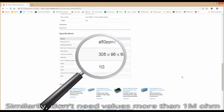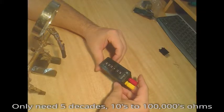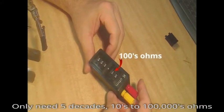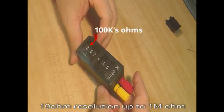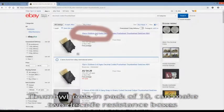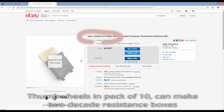Similarly, I don't need values greater than a mega ohm. So with 5 decades from tens through to hundred thousands ohms, we'll give 10 ohm resolution up to 1 mega ohm in a nice compact unit, and also can make 2 decade resistance boxes, as the thumb wheels from eBay are sold in packs of 10.